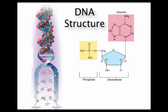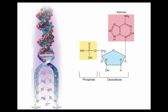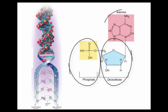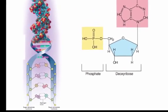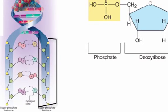DNA is a macromolecule made up of smaller molecules called nucleotides. Each nucleotide consists of a sugar, a phosphate group, and a nitrogenous base. The sugar and phosphate form what is called the backbone. The sugar in DNA is deoxyribose.